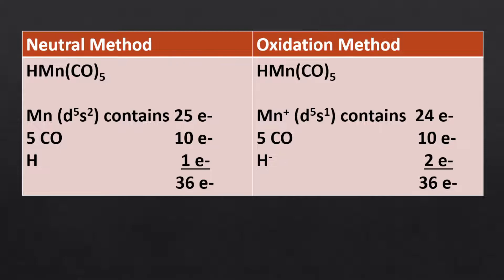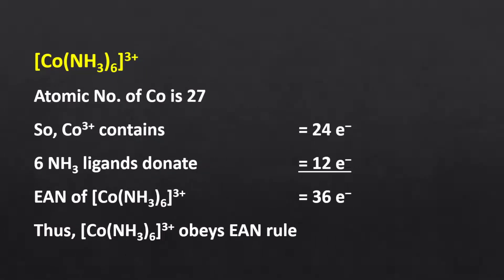Now let me illustrate some more examples. For the hexamine cobaltate ion complex, ammonia is a neutral ligand, so the charge on the complex indicates the oxidation state of cobalt is +3. Since the atomic number of cobalt is 27, cobalt(III) ion will contribute 24 electrons. Each ammonia ligand will donate 2 electrons, giving 12 electrons from 6 ligands. Consequently, the effective atomic number of this complex is 36, meaning the complex follows the effective atomic number rule and is stable.